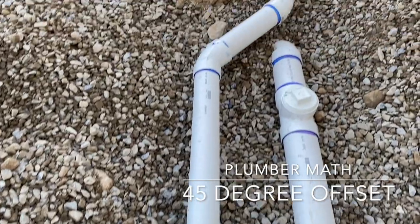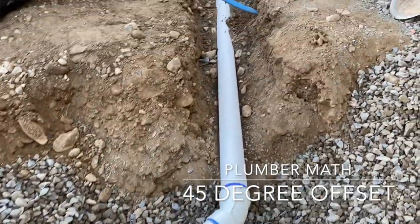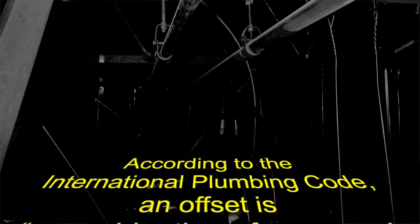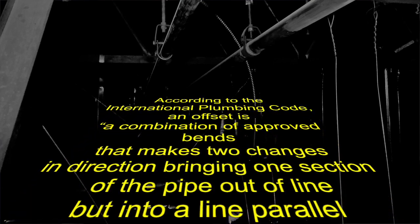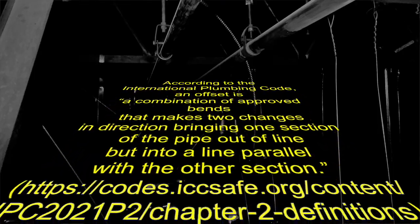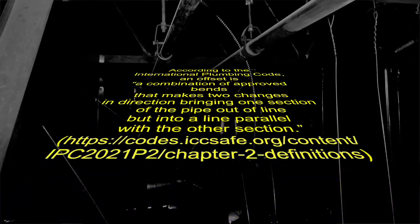Calculating an offset is one of the math skills you need to pass your journeyman plumber test. According to the International Plumbing Code, an offset is a combination of approved bends that makes two changes in direction, bringing one section of the pipe out of line, but into a line parallel with the other section.